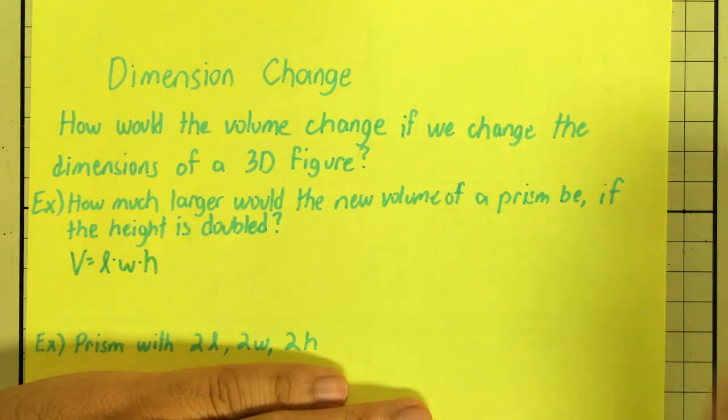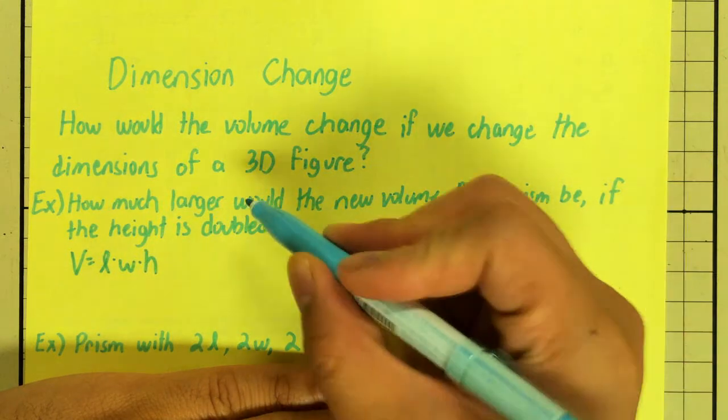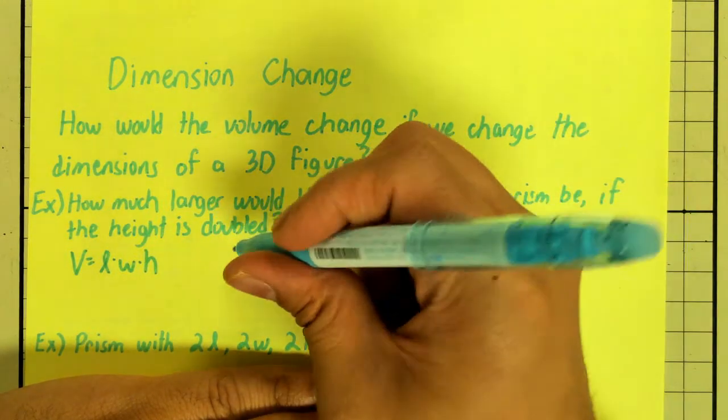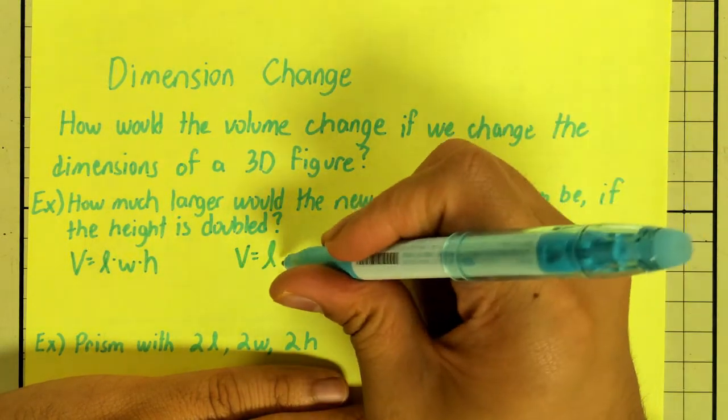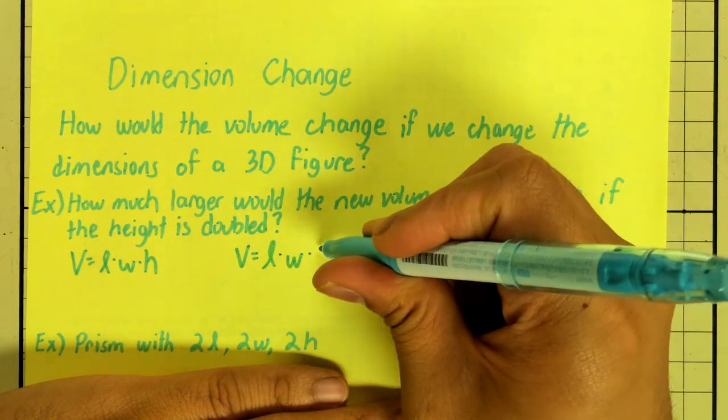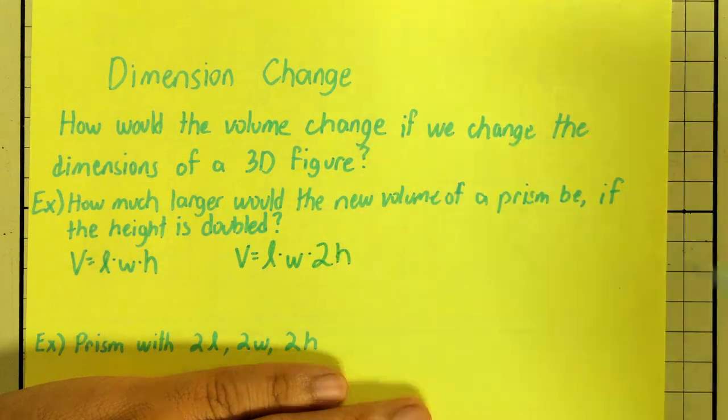Volume of a prism is length times width times height. And then, let's take a look at what happens. It says here we want our height to be doubled. So, my new volume, length stays the same, width stays the same, but now I have doubled my height to 2H.